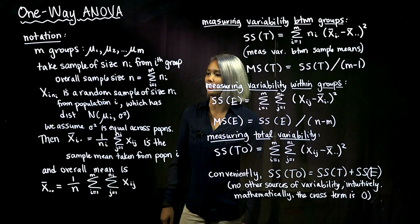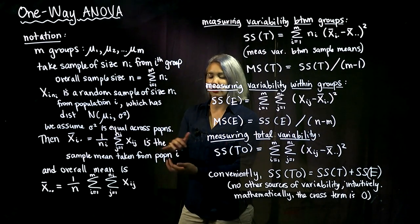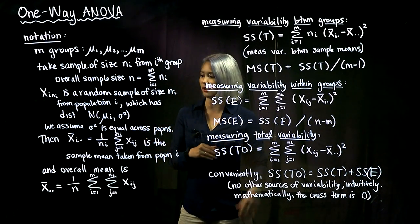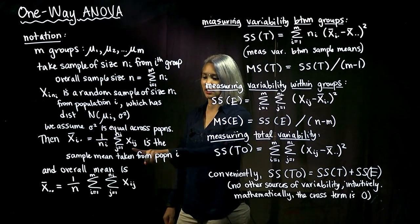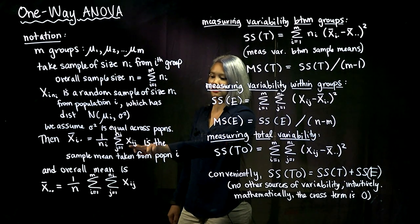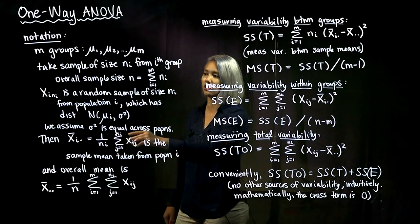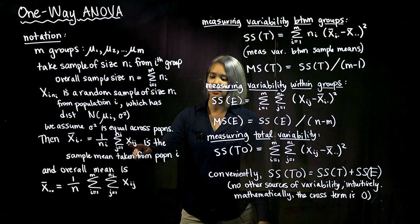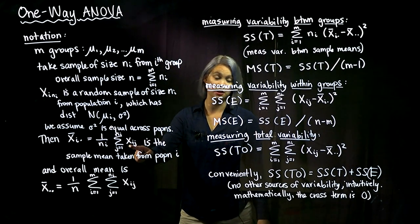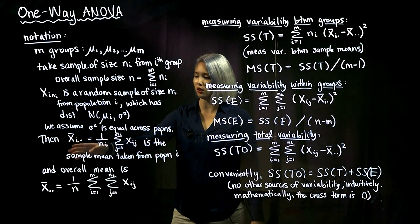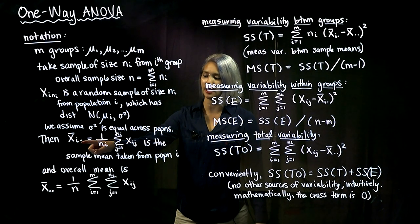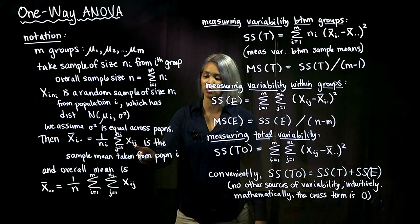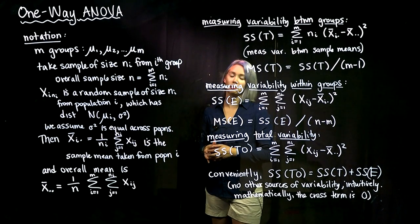We have our samples x_{i,n_i} from each of those i-th populations. We can think about the mean for each of those populations — what's the mean for population 1, population 2, and so on. Our sample mean for the i-th population is computed by adding up our sample and dividing by the sample size n_i. We denote this by x-bar with subscript i-dot. That dot just means we're averaging across that second subscript j.